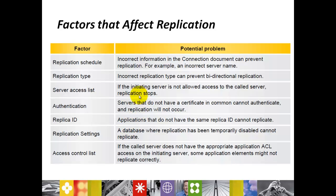Replica ID: applications that do not have the same Replica ID cannot replicate with each other. Replication Settings: a database where replication has been temporarily disabled cannot replicate properly. Access Control List: if a called server does not have appropriate ACL access on the initiating server, some application elements may not replicate correctly. I will show you each factor and where to check it, so you can find and fix replication issues.